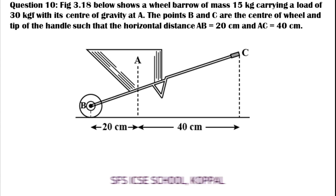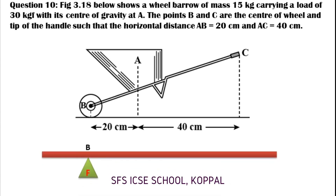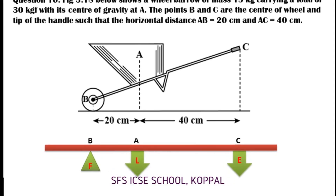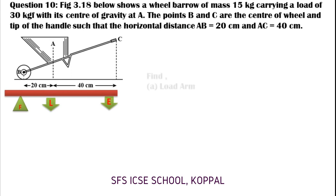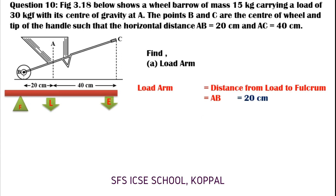Please note: fulcrum is at B, load is acting on point A, and effort is acting on point C. Part A — find the load arm. The load arm equals the distance from load to fulcrum, which is AB, equal to 20 cm.